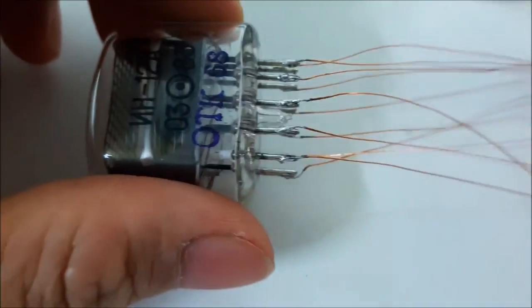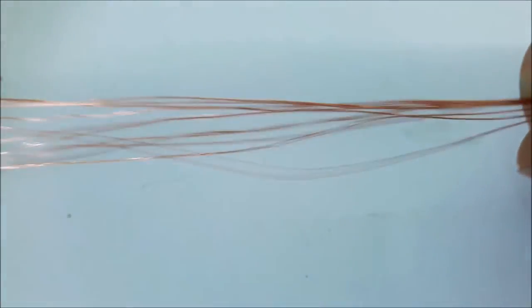After finished soldering, I will twist all copper wire to make it small and ready to use with breadboard.